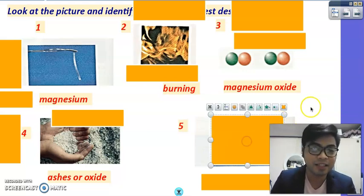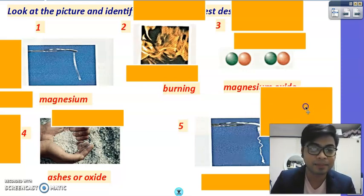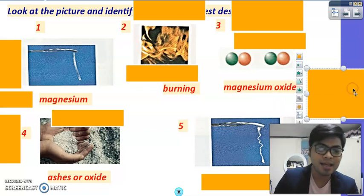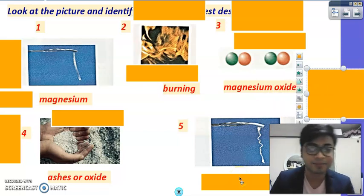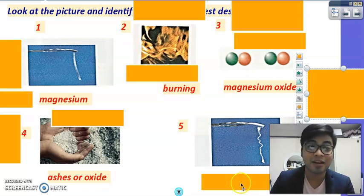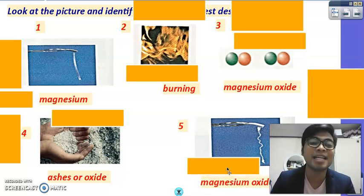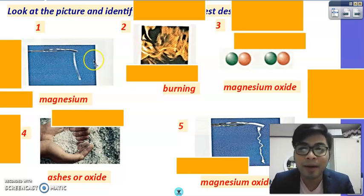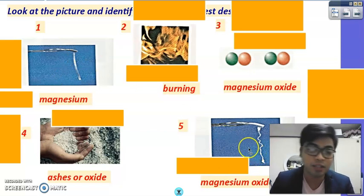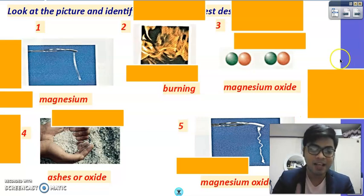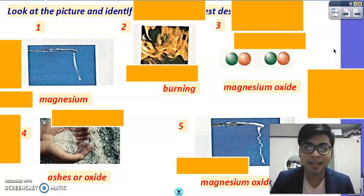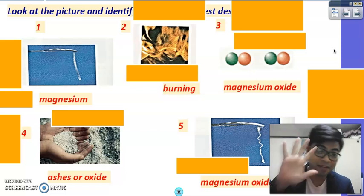Question 5: look at the picture — what is formed here? We call this magnesium oxide. This is the product when we burn magnesium. How many items did you get correctly? If you got five, you're really good at this.